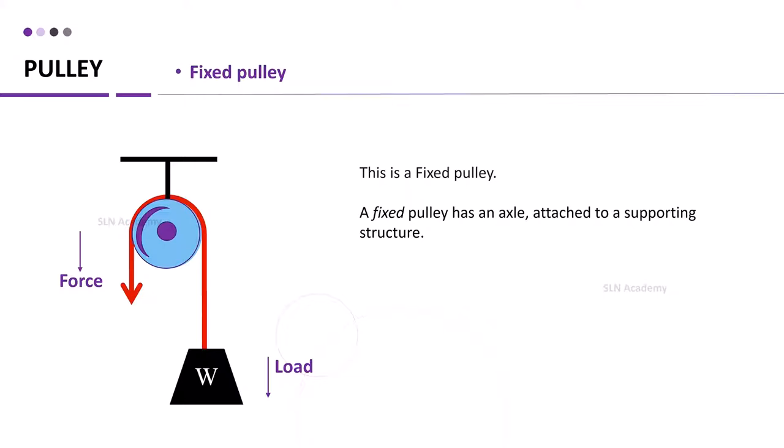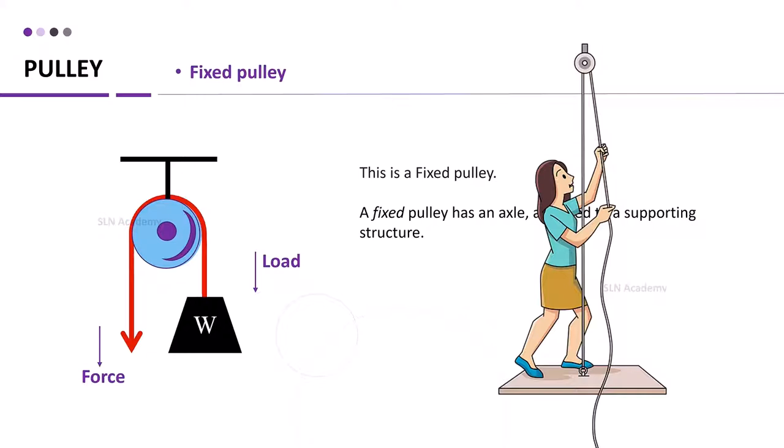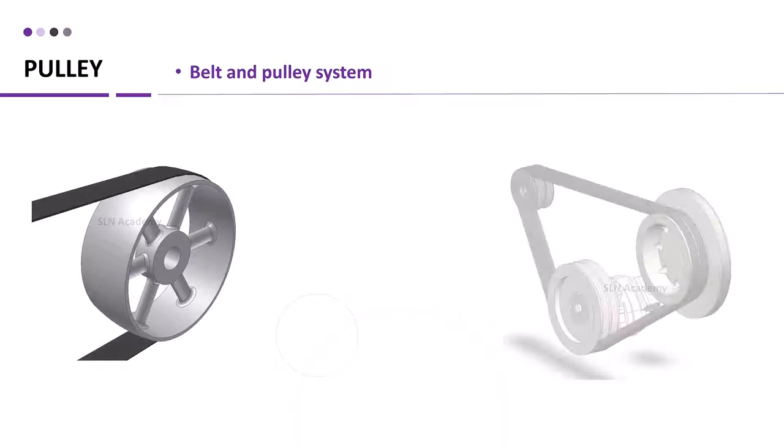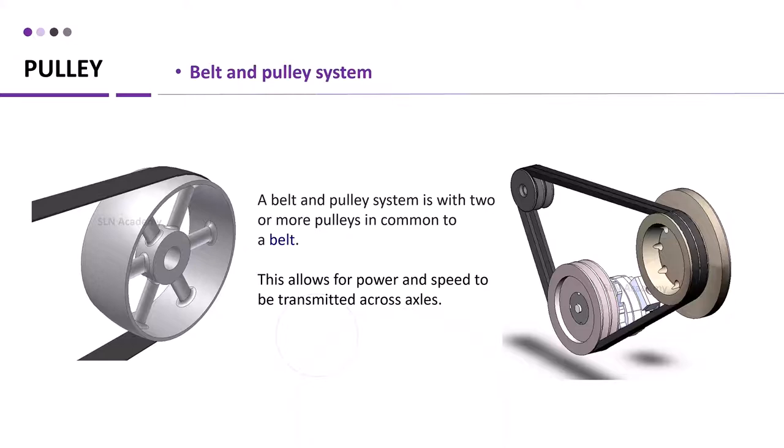Fixed pulley. This is a fixed pulley. A fixed pulley has an axle attached to the supporting structure. And this is how pulley works. It is used to make lifting easier. This is an example of belt and pulley system. A belt and pulley system is with two or more pulleys in common to a belt. This allows for power and speed to be transmitted across axles.